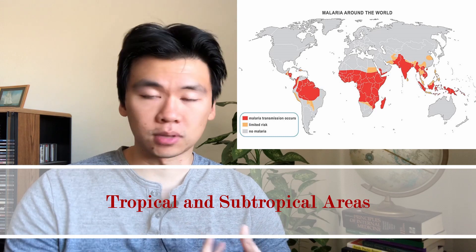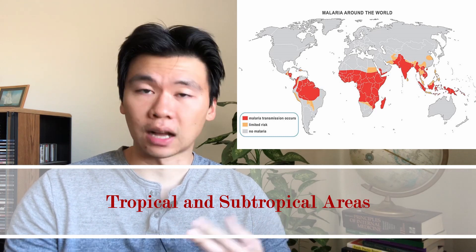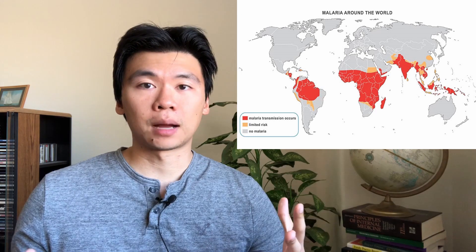Those are astounding numbers. Malaria affects the tropical and subtropical areas like sub-Saharan Africa, Southeast Asia, and South America. Malaria is caused by a parasite from the plasmodium group and is carried by a certain type of mosquito called the anopheles mosquito.